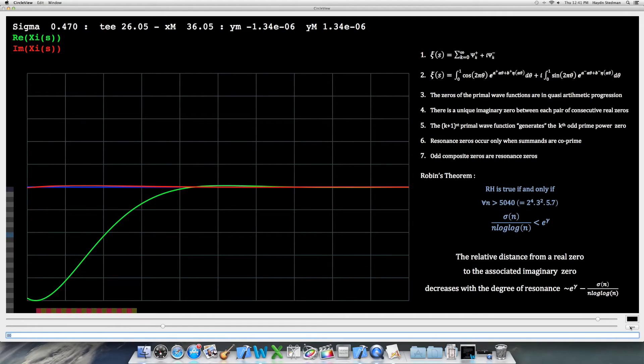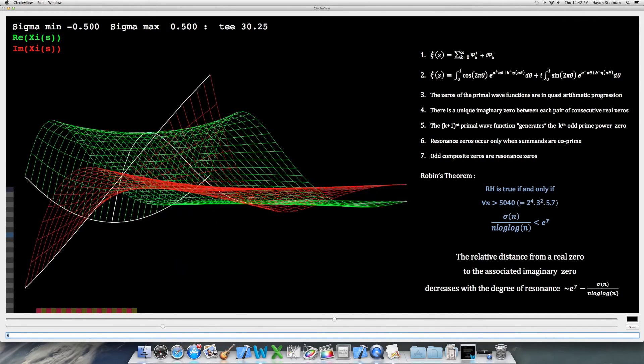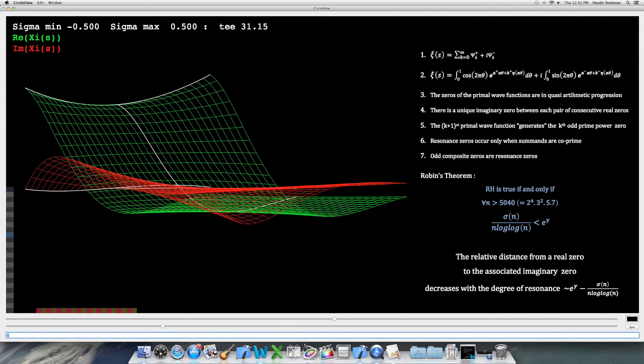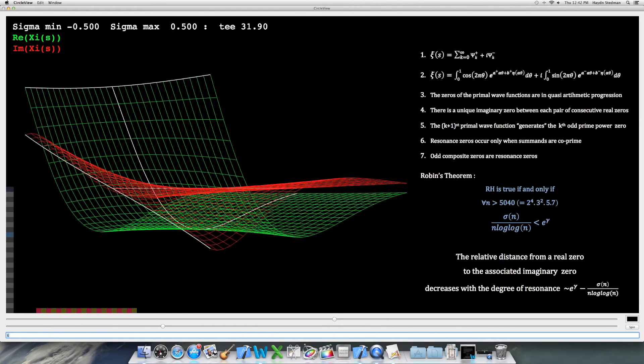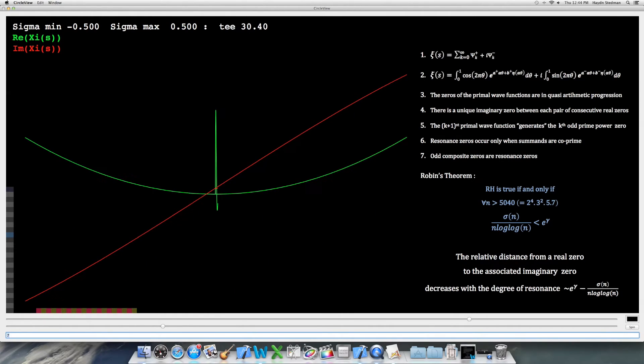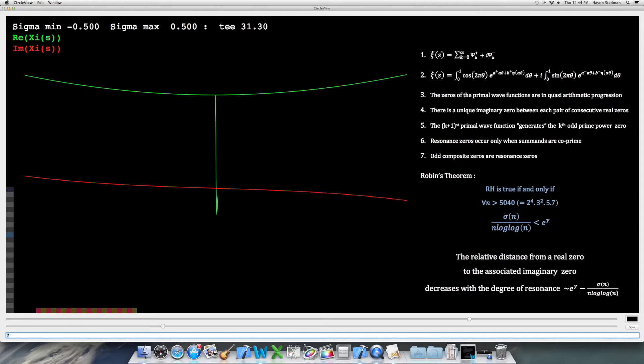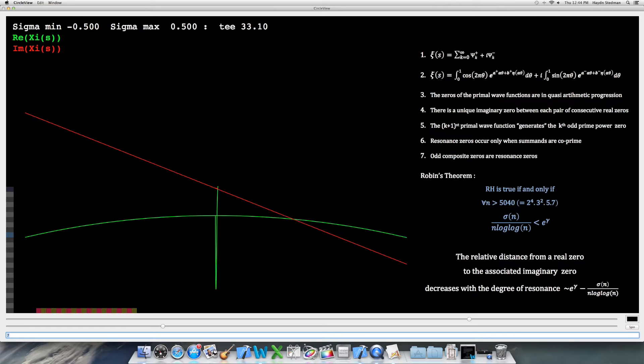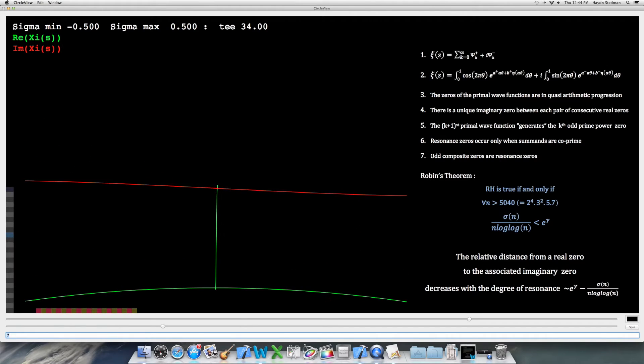So, in summary, we can say seven things about the function xi. Firstly, it is a sum of wave functions, or can be expressed as a sum of wave functions. Secondly, it can be expressed as a sum of those two integrals, with a and b increasing functions of t and sigma.